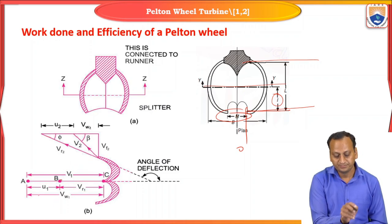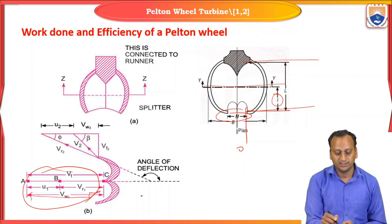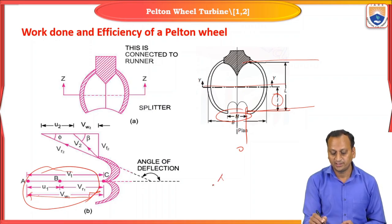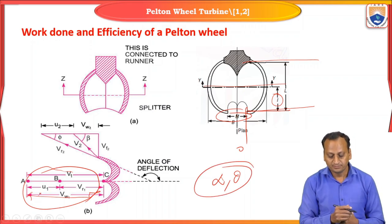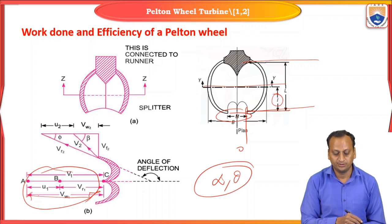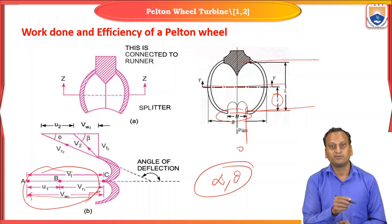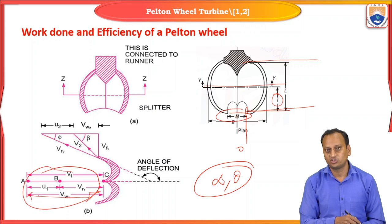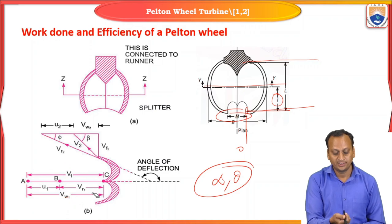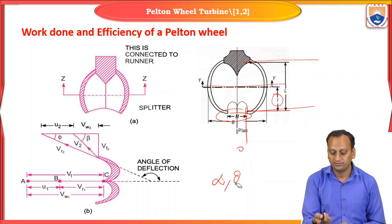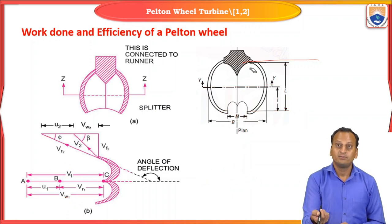VW1 is equal to V1, the whirl velocity at inlet. Because alpha is 0 and theta is also 0, the flow and radial velocity components become zero and these components lie horizontally, making the velocity triangle a straight line. Now we will see how to draw the outlet velocity triangle for a Pelton wheel turbine.